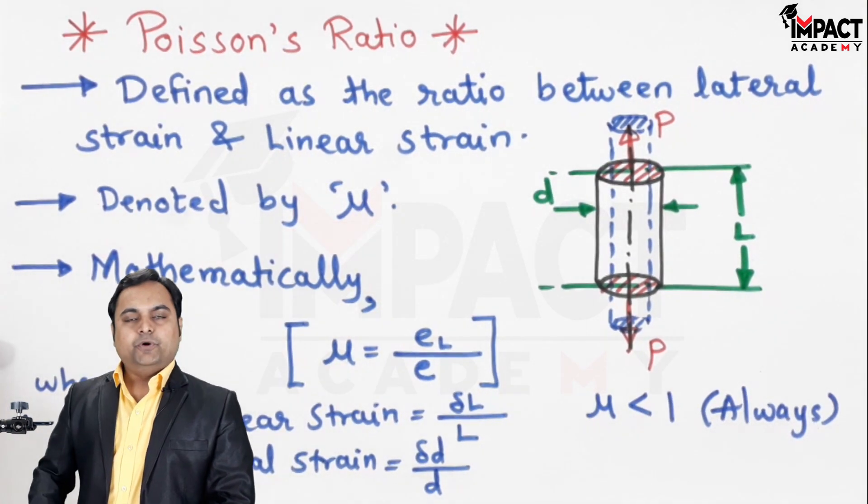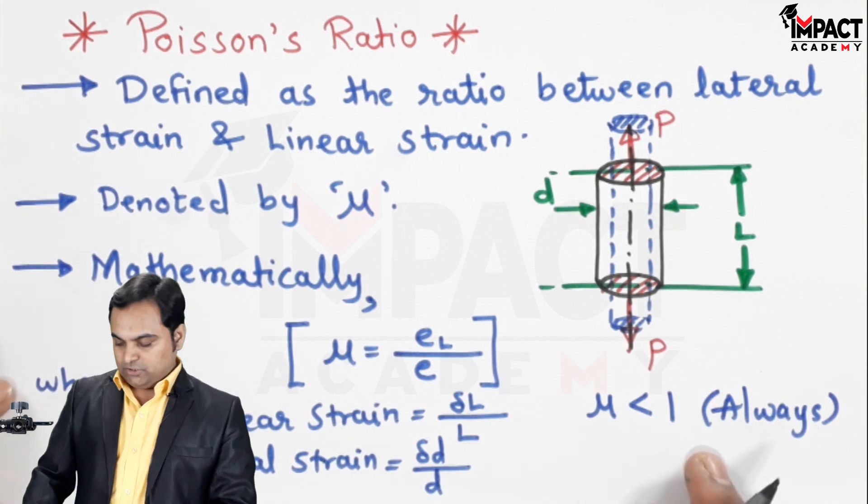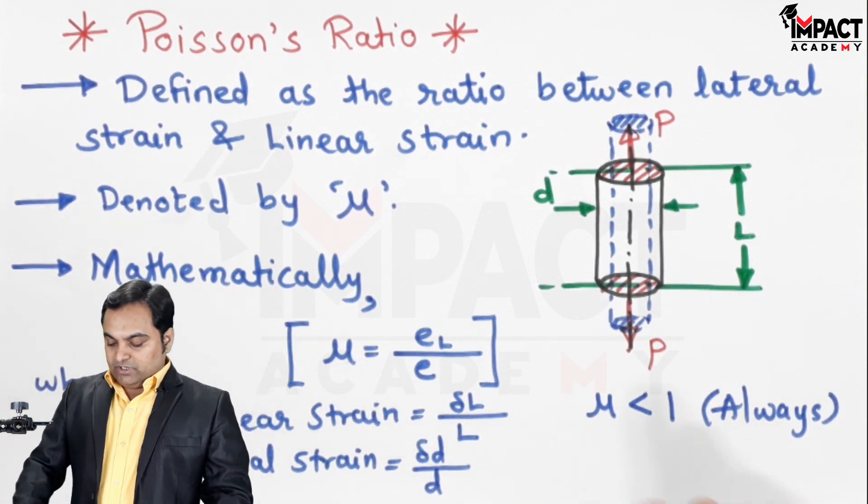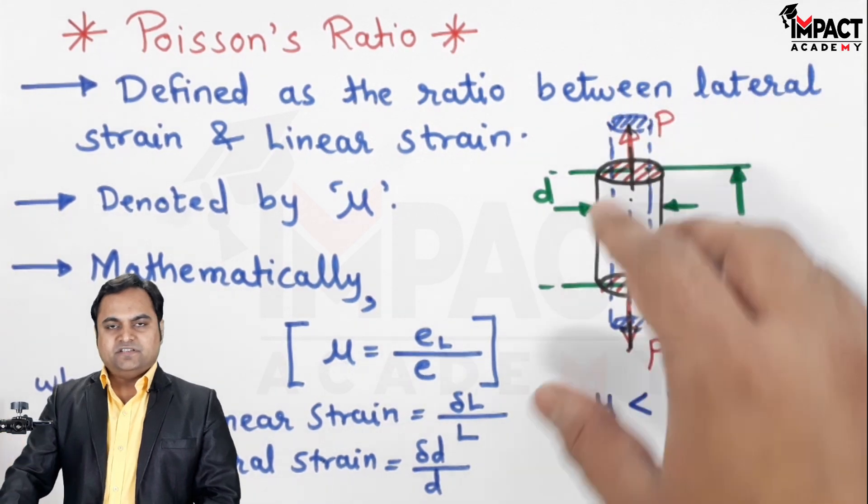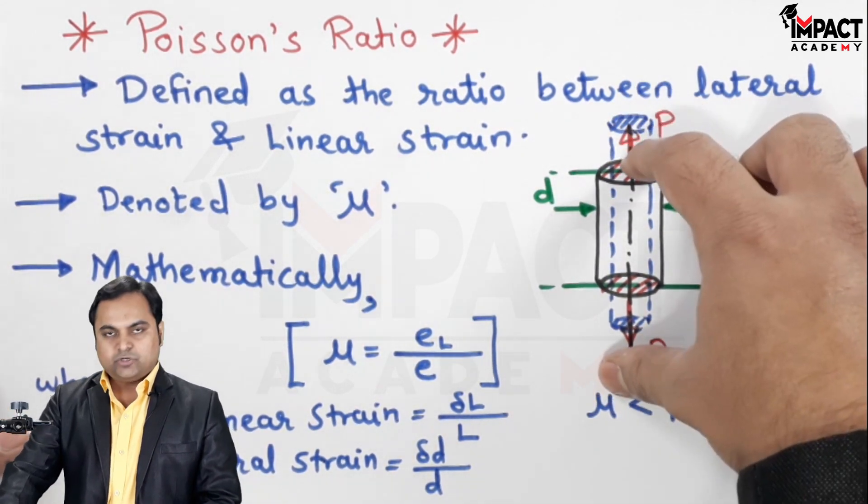That is, it can be 0.2, 0.3, 0.33, anything but less than one. So here we have seen that when it is tensile load the length increases. Similarly, if you are taking an example of compression, in that case also when the length is getting decreased the diameter goes on increasing.